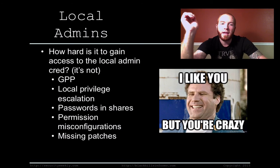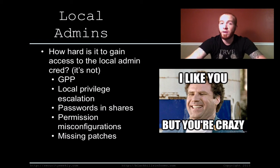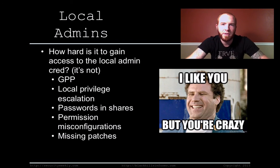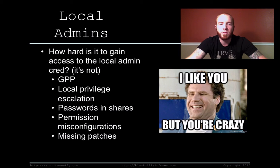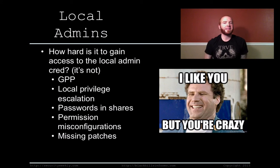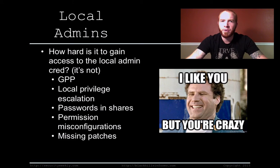Escalation is nothing new, and I'm not going to go into too much detail, but here are some examples of how you could potentially get to a local admin cred. Our favorite is group policy preference files because it's so common — we find it on pretty much every test. We also like to do standard local privilege escalation. I personally like to use the PowerUp script, a PowerShell script that finds local privilege escalation vectors. And like anyone would ever put passwords in a cleartext file out on a share — this happens, we've found them.